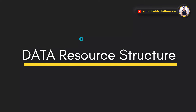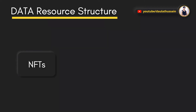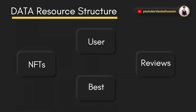Before we talk about the URL structure, we have to understand what kind of data we're going to provide in our API. The first one is the NFT resource, the second is the user resource, the third is the review resource, and the fourth is the best resource. These are the four resources we're going to provide.